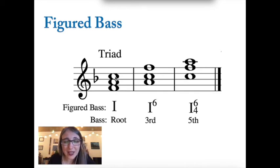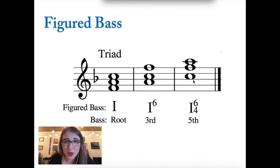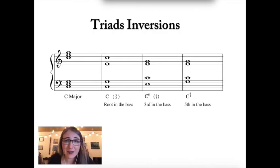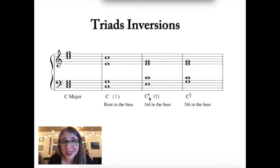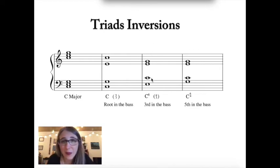If the 5th of the chord is in the bass, that's called a '6-4 chord,' or second inversion, because you have a 6th and a 4th above the bass. So: if you see '6,' the 3rd is in the bass; if you see '6-4,' the 5th is in the bass. In open position, what occurs above the bass doesn't matter — you only care about what's specifically in the bass. That's where the name comes from.